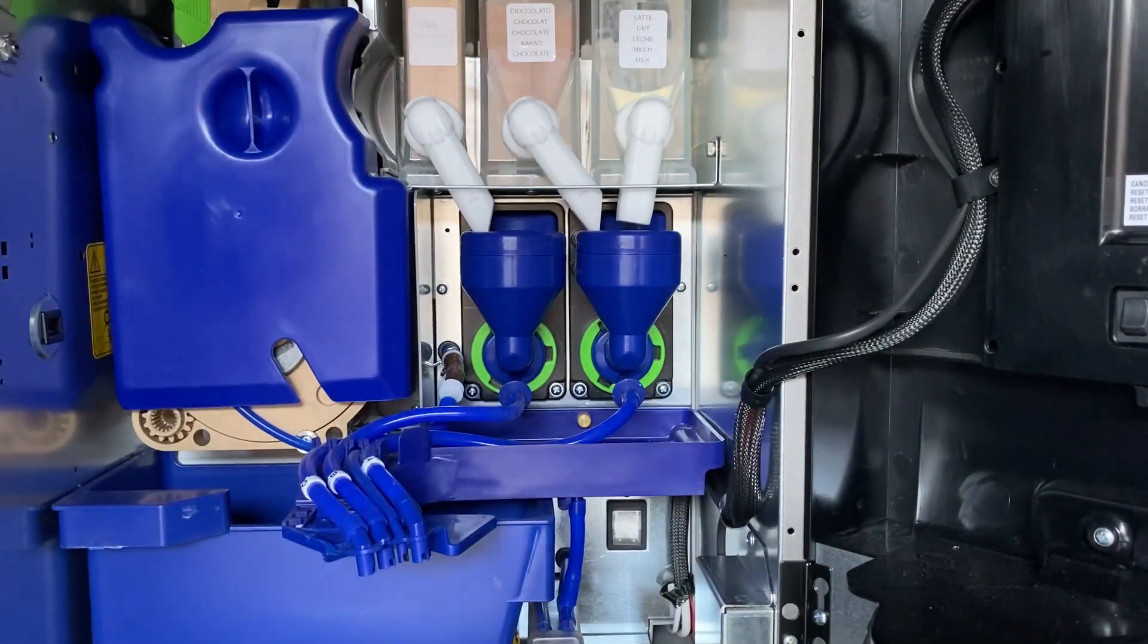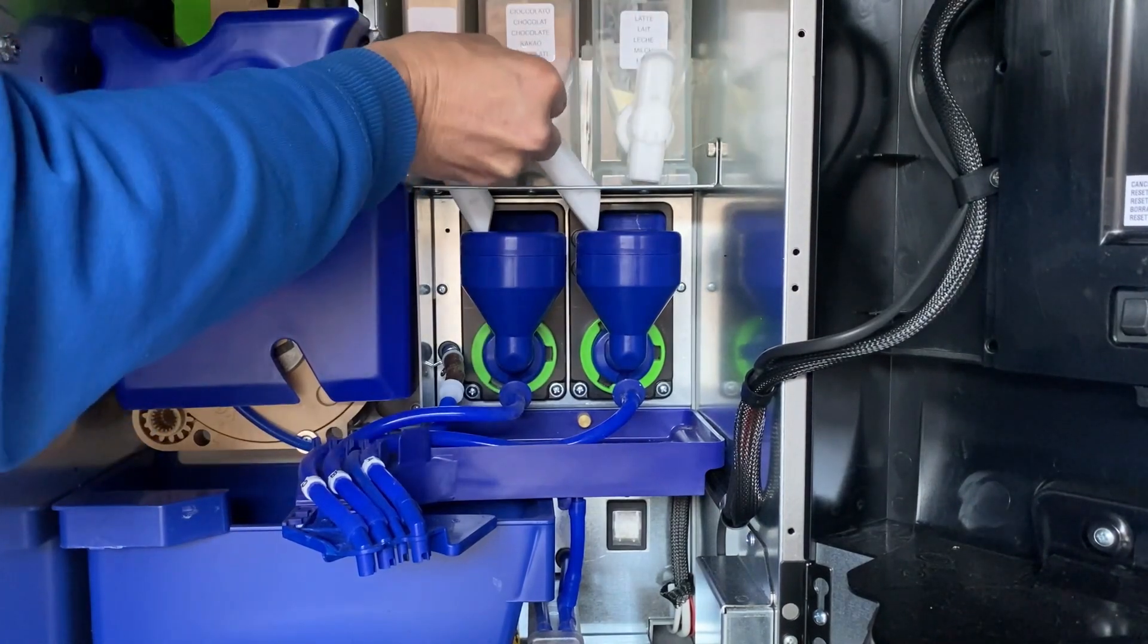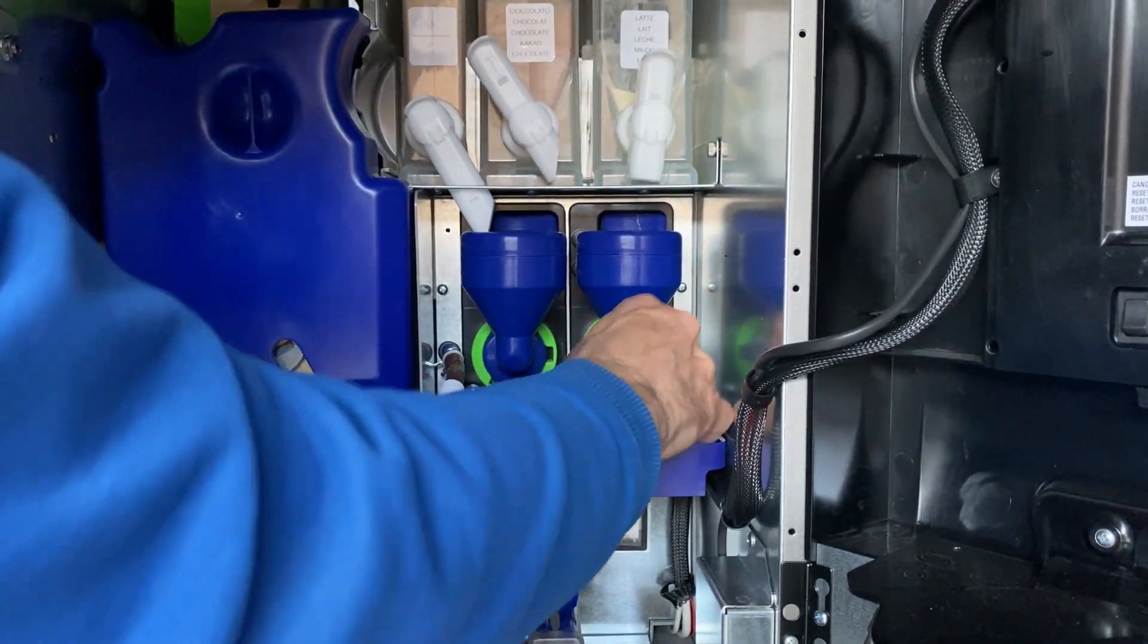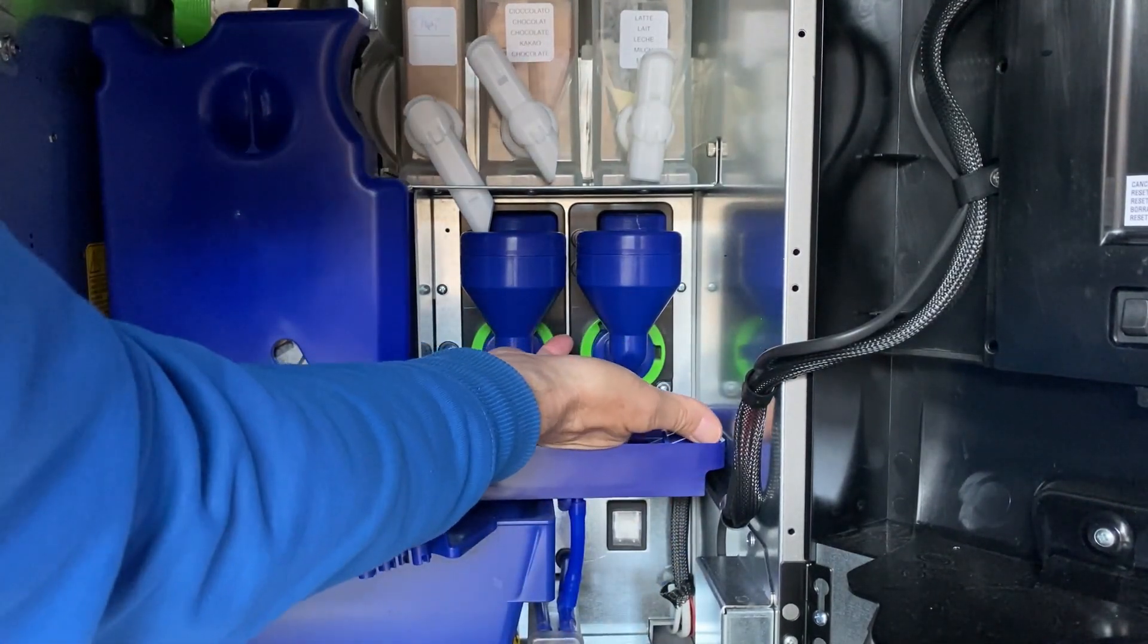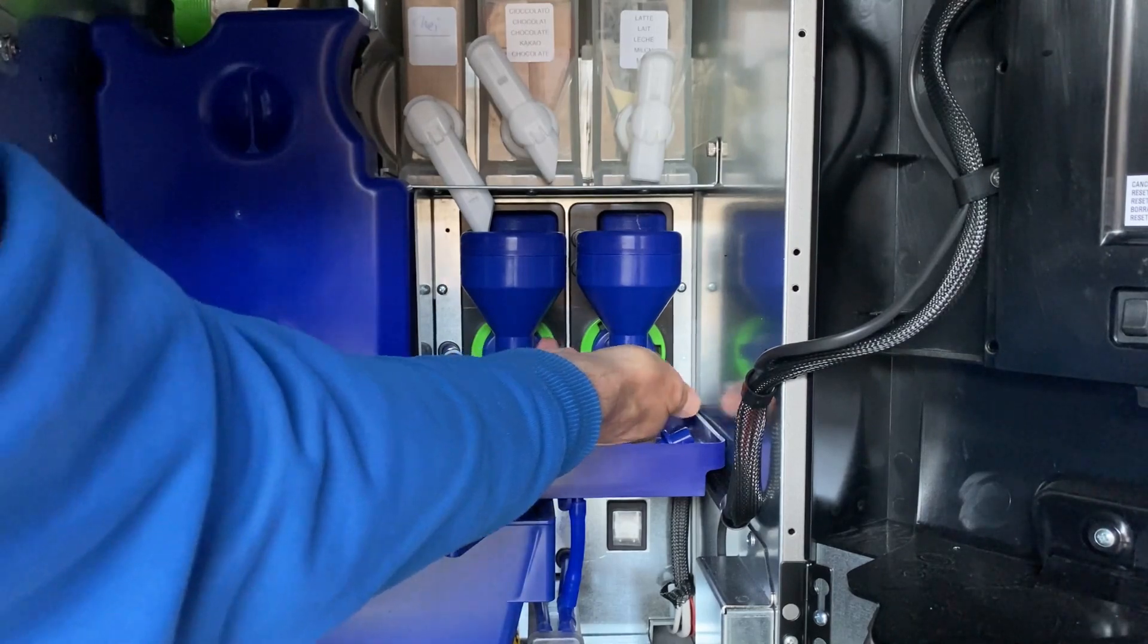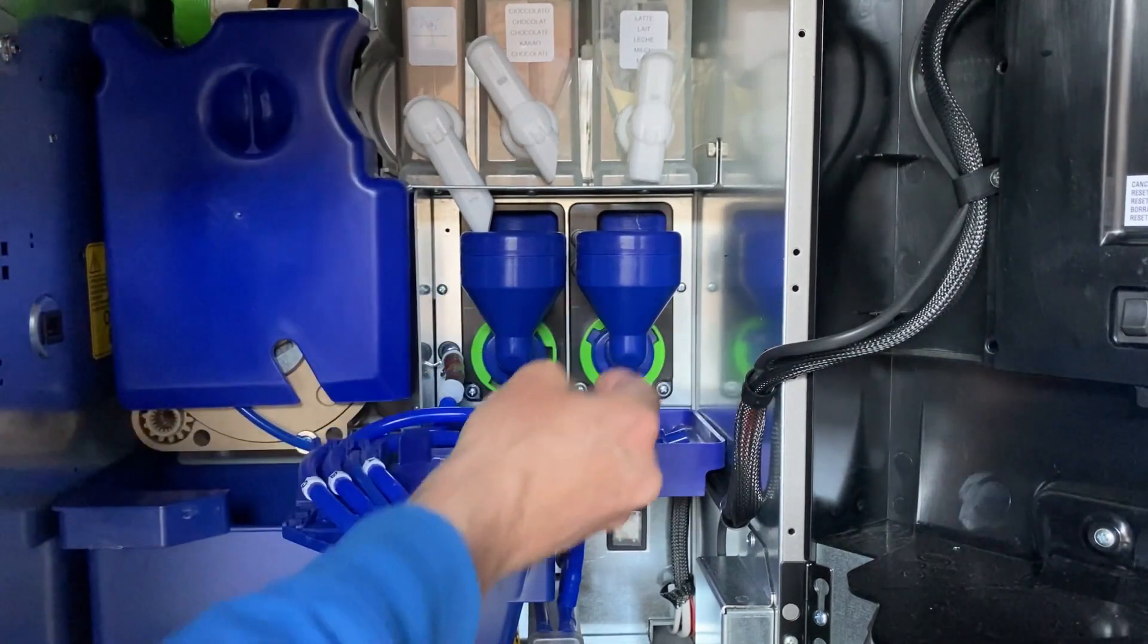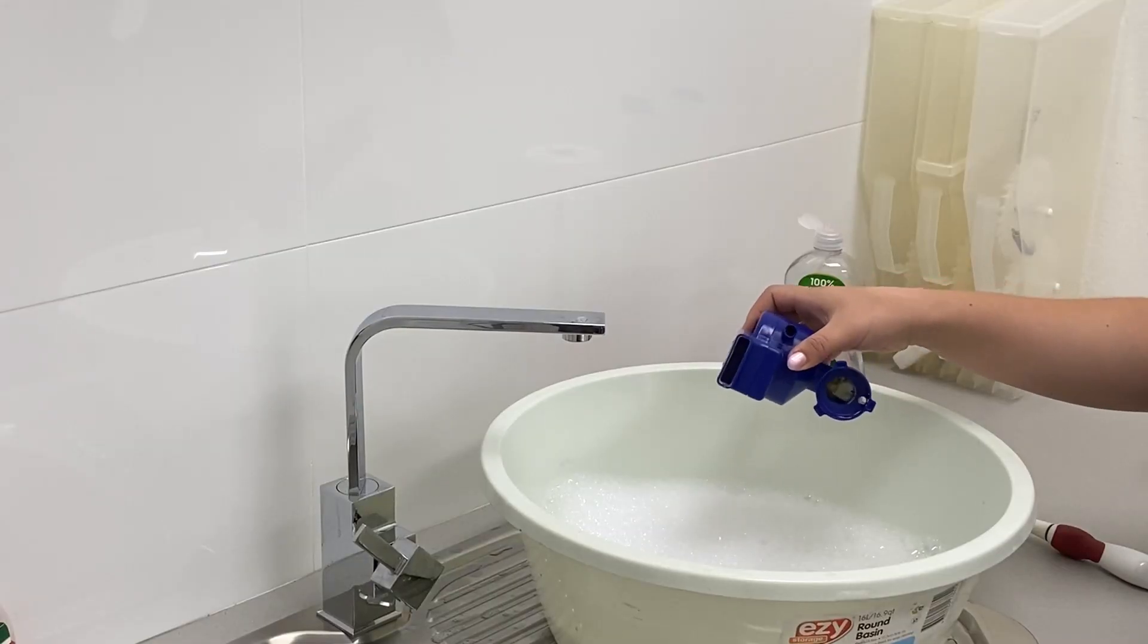To clean your mixing bowls, move your spouts up in the closed position and unplug your tube to the mixing bowl. On the green rim, turn it counterclockwise and then pull your mixing bowl out.